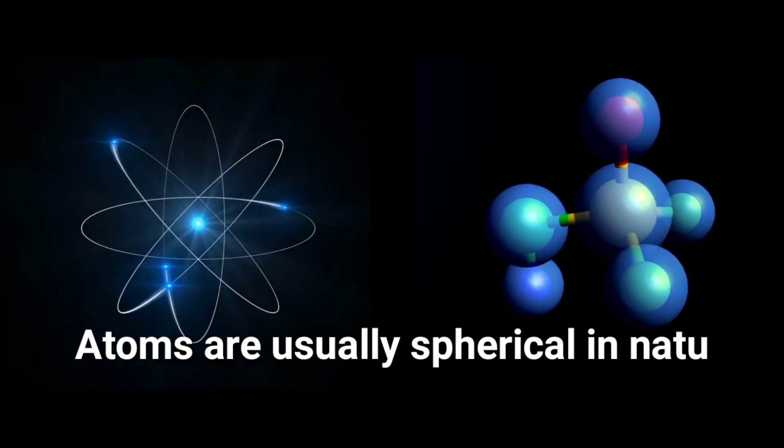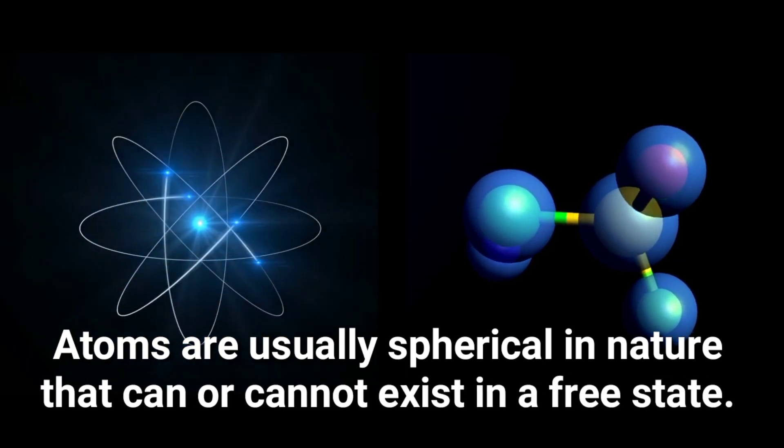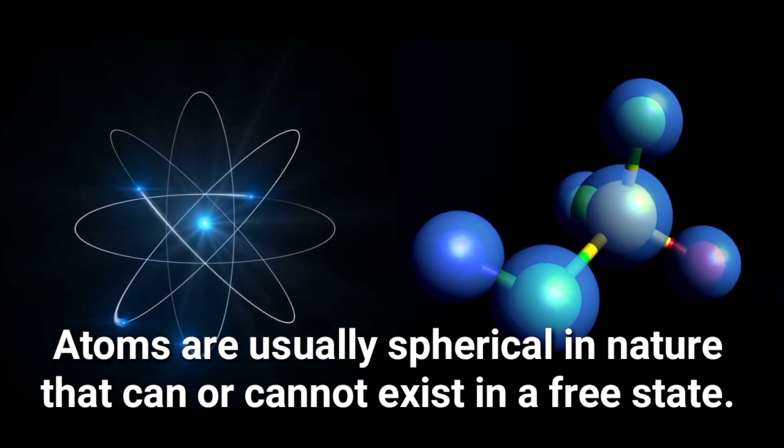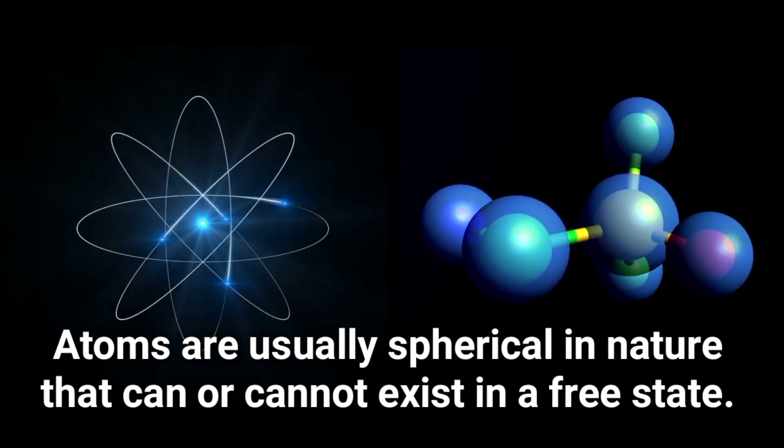Atoms are usually spherical in nature that can or cannot exist in a free state. Meanwhile, molecules are bent, some are linear, and exist freely.